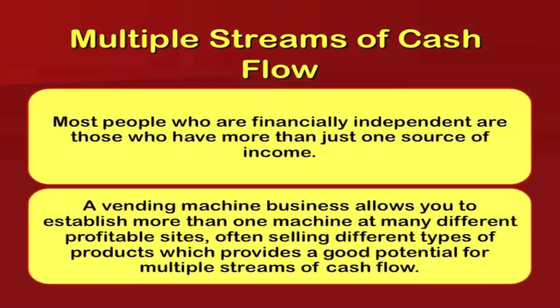Most people who are financially independent are those who have more than one source of income. A vending machine business allows you to establish more than one machine at many different profitable sites, often selling different types of products, which provides good potential for multiple streams of cash flow. You don't need 24-hour presence — it can be a side income. If financially independent with enough capital, you can establish vending machines at different locations to increase your sources of income.